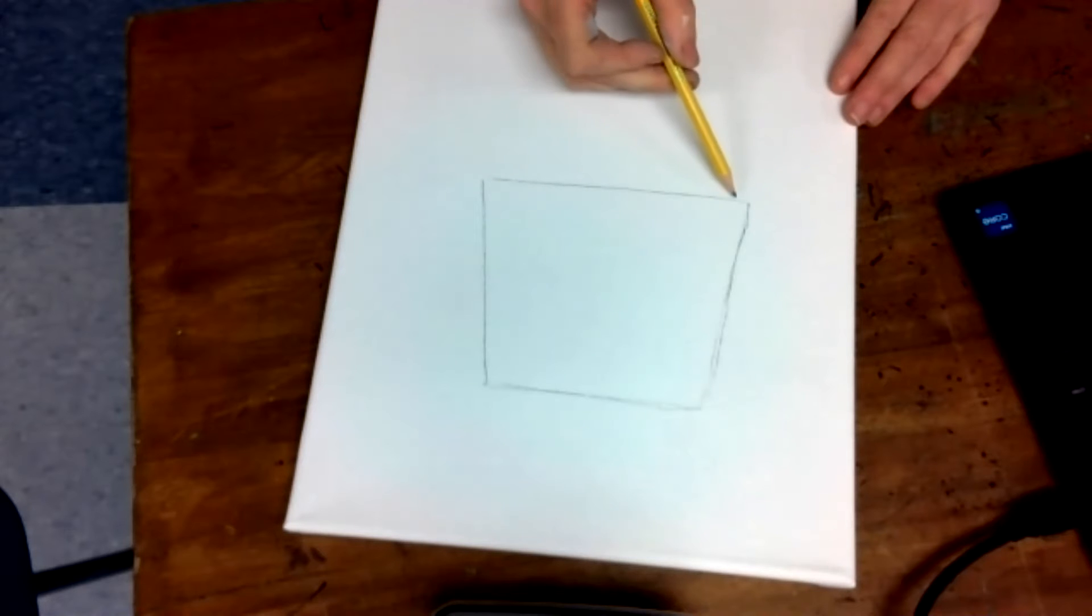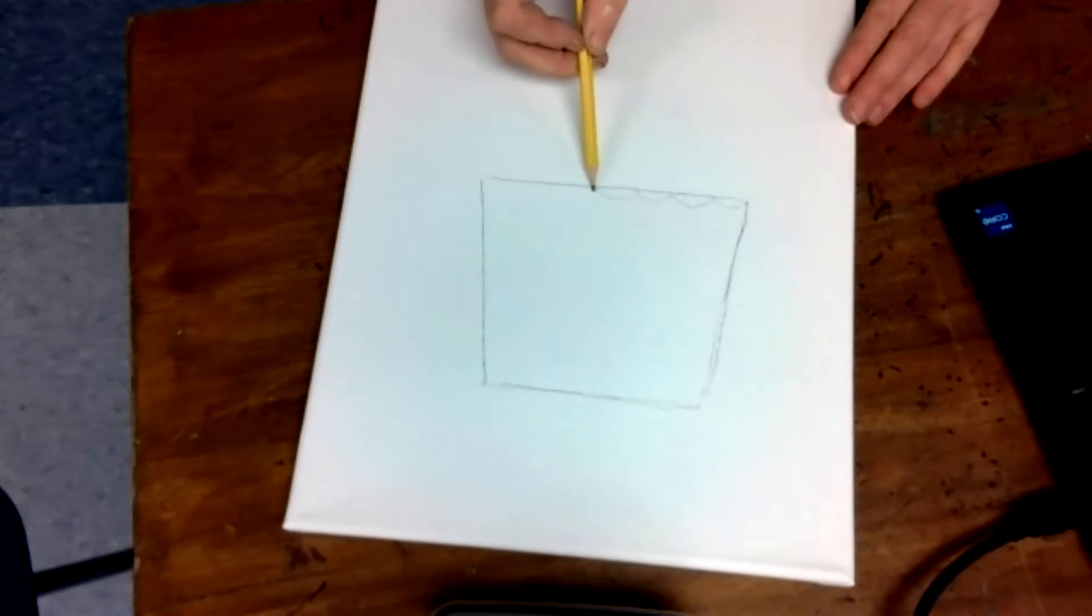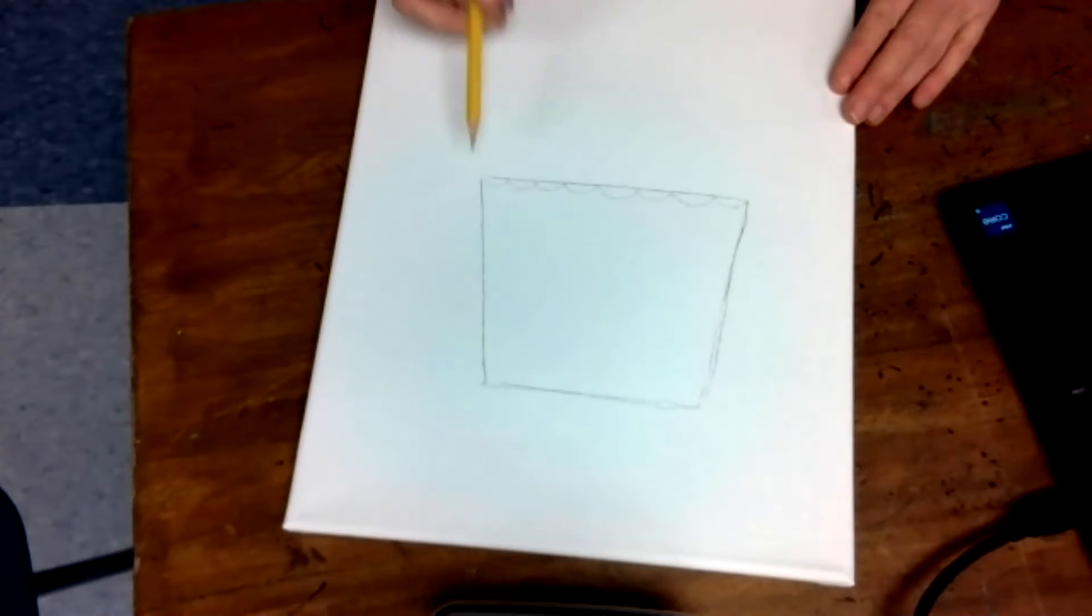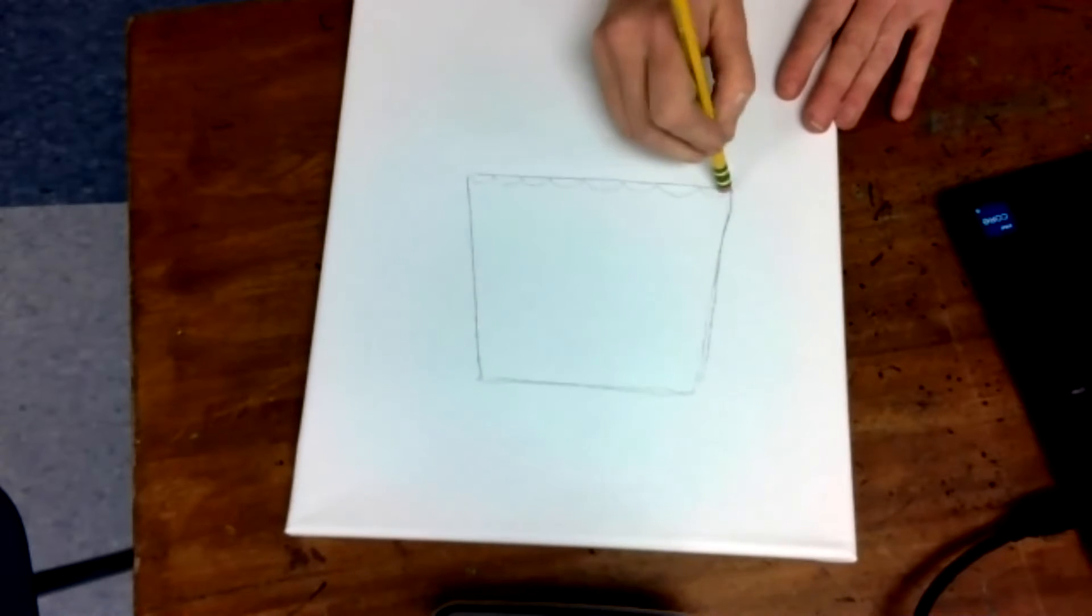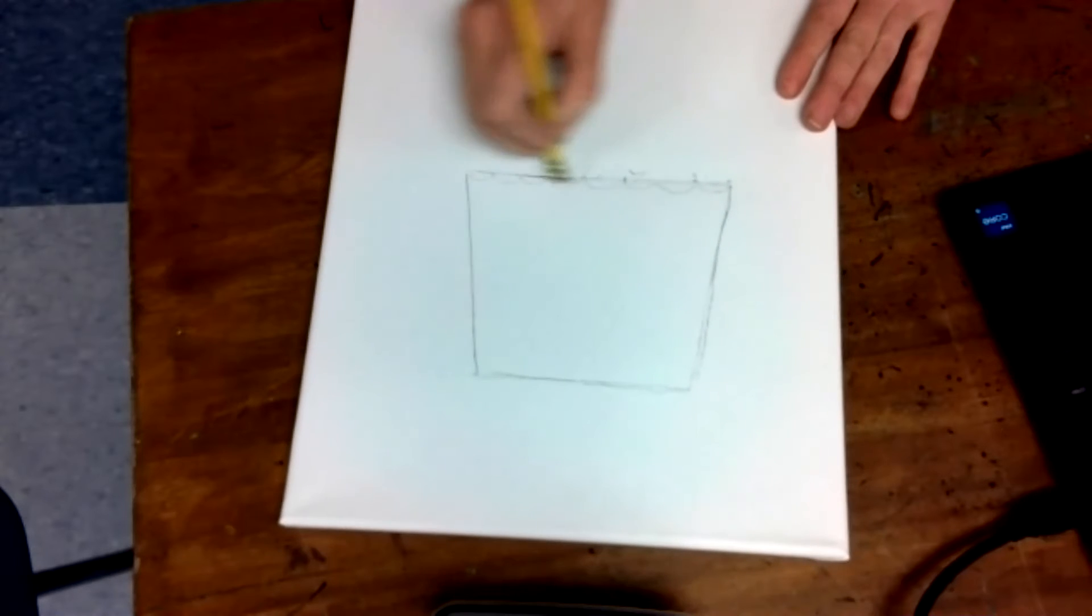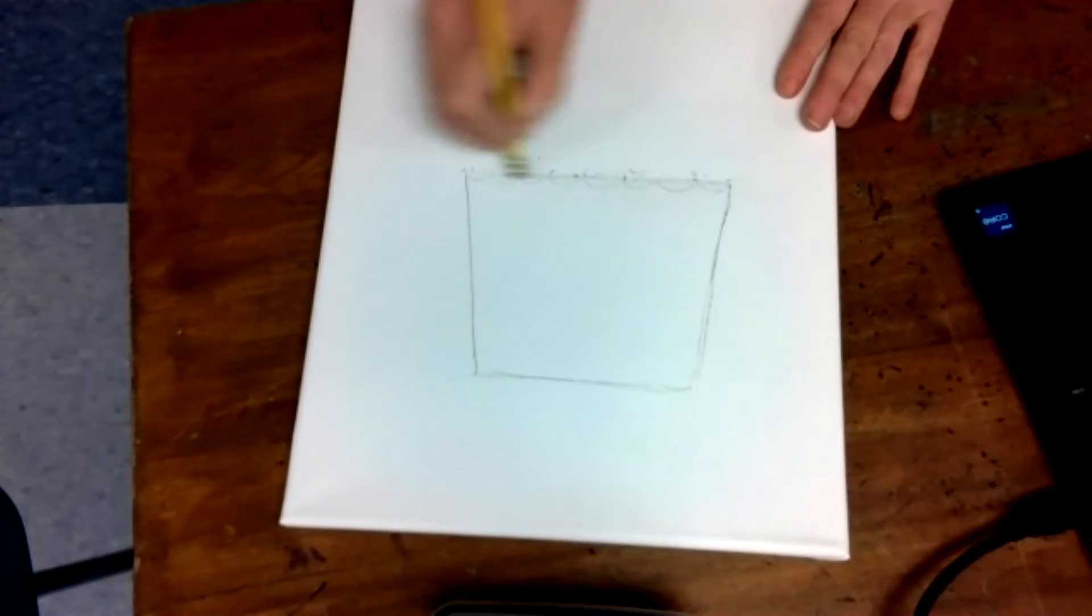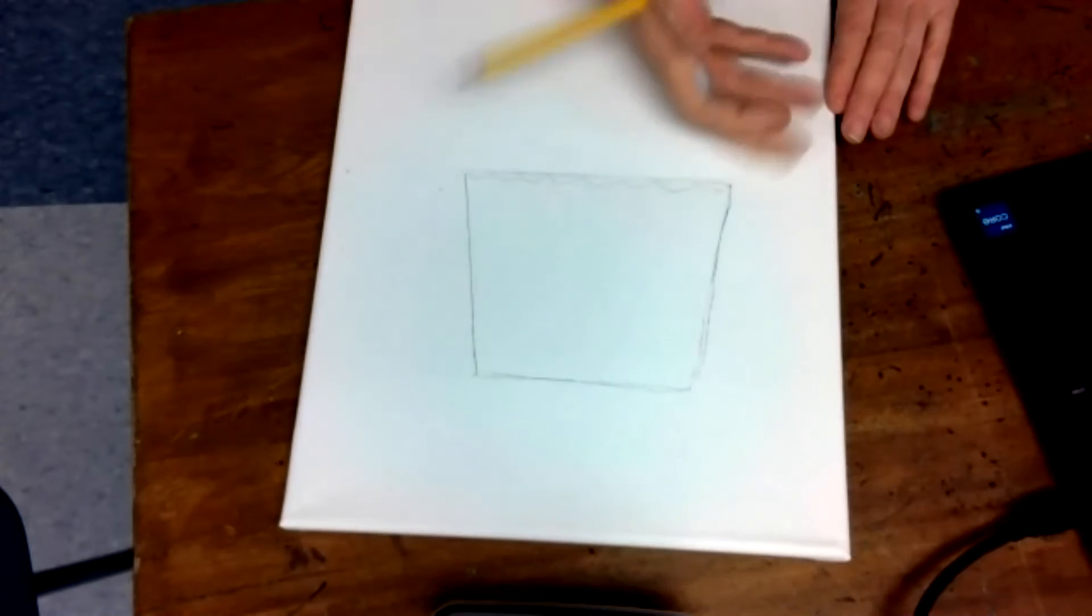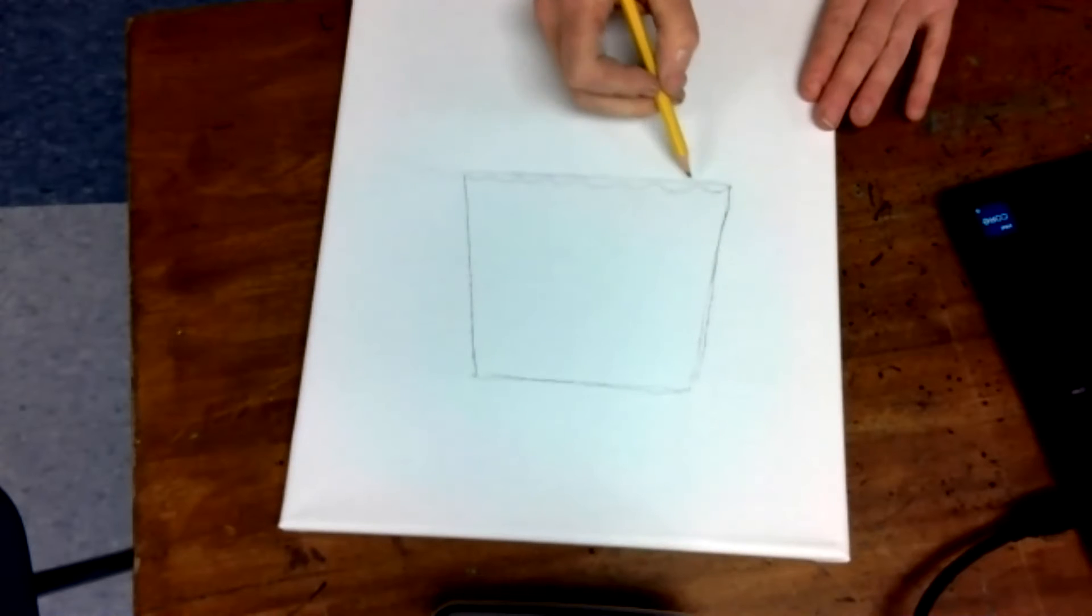Now you want to start working on the actual cupcake. If you wanted to make this design here, you can make a design of the shape of the top of the liner. Some of you might decide you want frosting to be dripping down over the edge. This is an example of why you want to press really lightly, so you can erase if you have any problems.